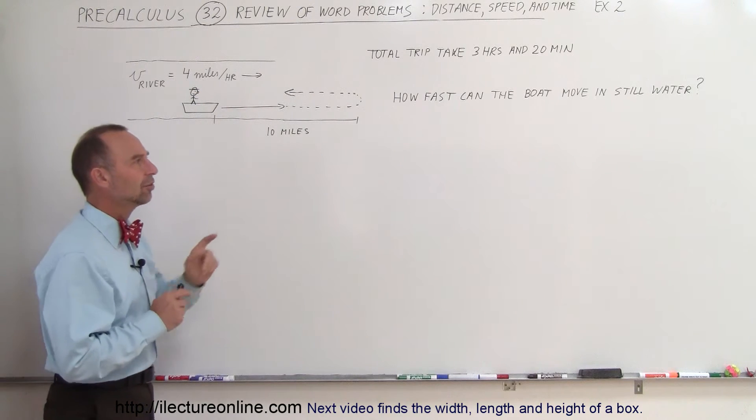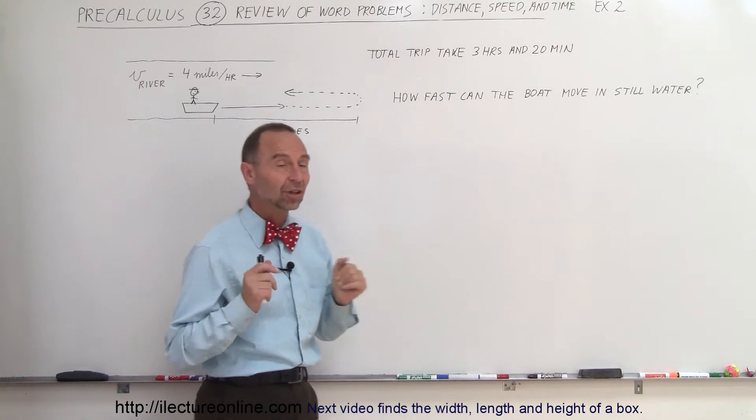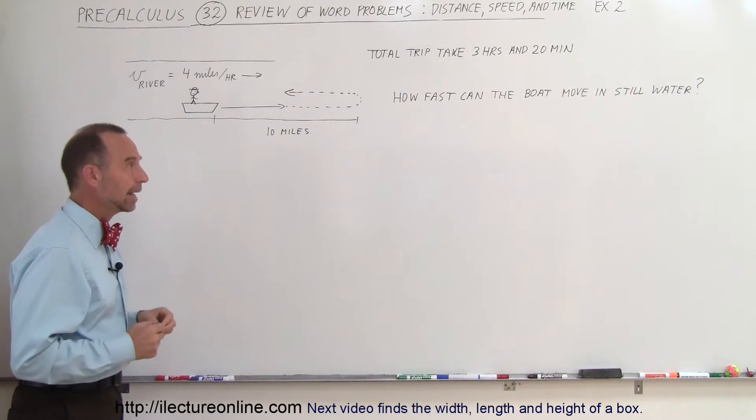One difficulty here is that the river is flowing downstream at 4 miles per hour. So, the question is how fast can the boat travel or move while in still water? Okay, how do we do that?